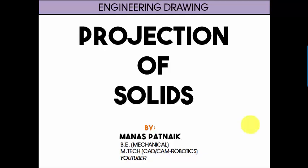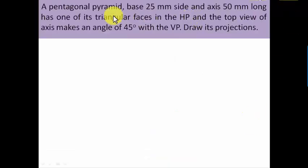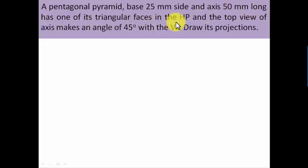What's up guys, this is Manas Patnak and today we're going to be dealing with a pentagonal pyramid. So let's get started with the problem. A pentagonal pyramid with a 25mm side and axis 50mm long has one of its triangular faces in the HP, and the top view of the axis makes an angle of 45 degrees with the VP. Draw its projection.